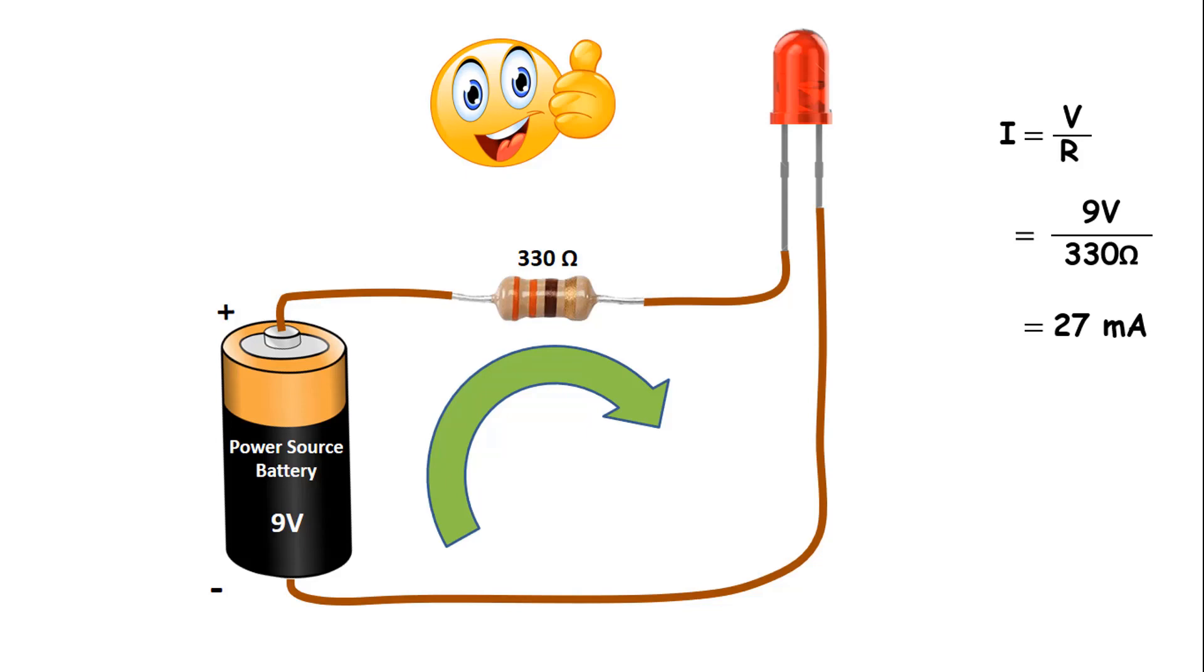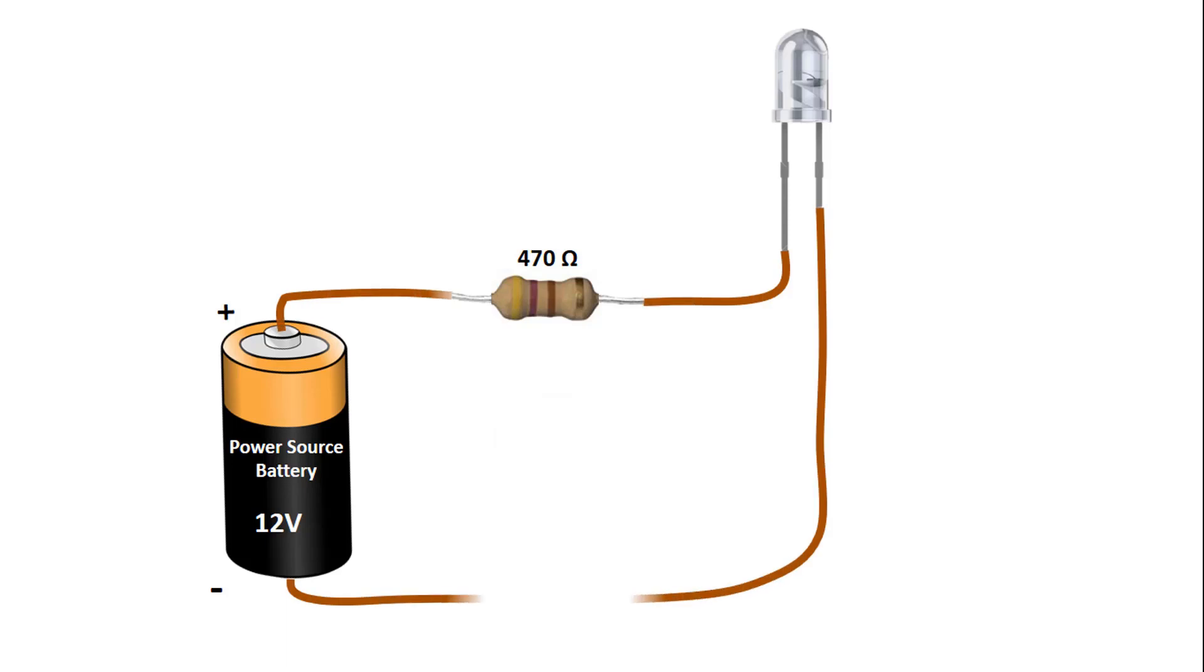The current flowing through the circuit should be adjusted with suitable resistors in order to prevent damage to the circuit elements used. If we want to use this LED properly with 12V voltage source, this time we should use higher one such as 470 ohm resistor.